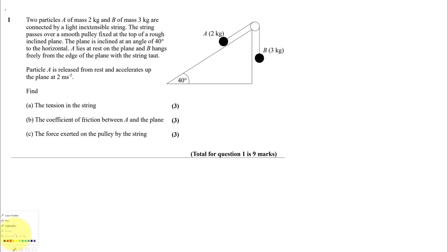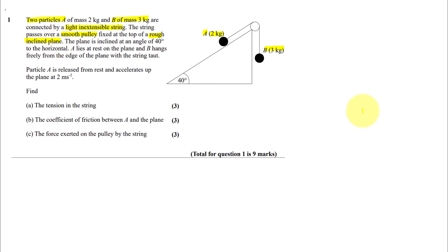As requested for Year 13, here is a detailed example of questions on pulleys to build up your skills. We've got two particles: A with mass 2 kilograms and B with mass 3 kilograms. They are connected by a light inextensible string that passes over a smooth pulley fixed at the top of a rough inclined plane, so there will be friction on the plane.